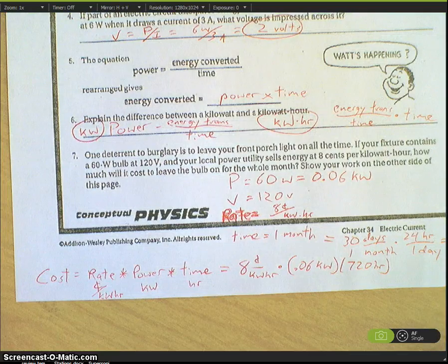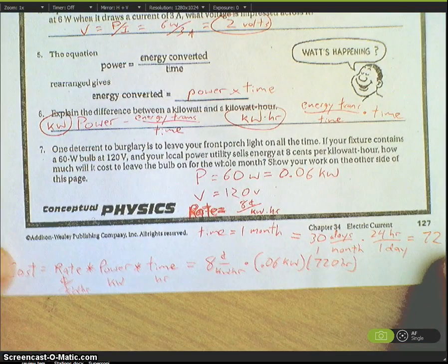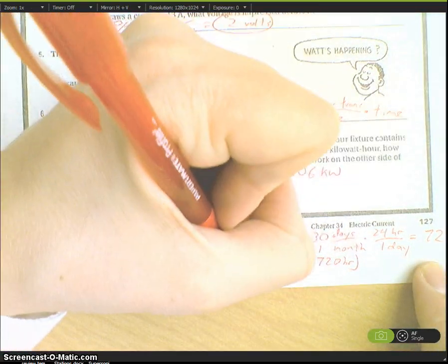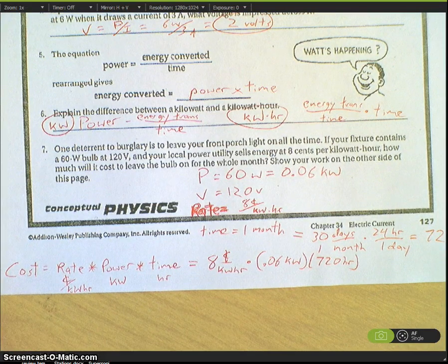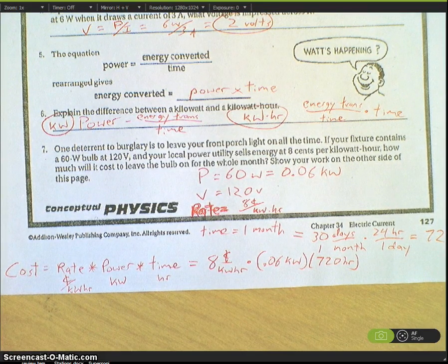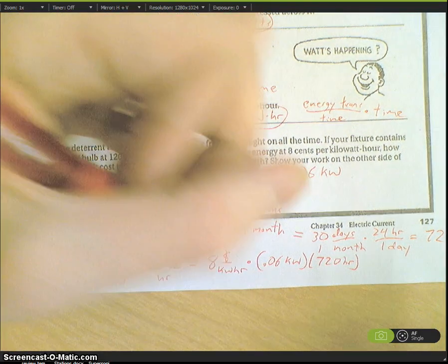Could somebody put that into a calculator for me and tell me what we get? Eight cents times 0.06 times 720.